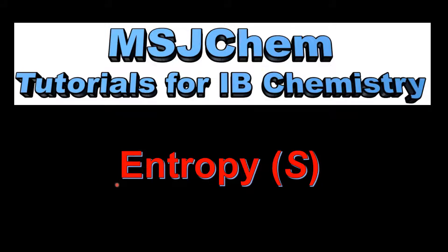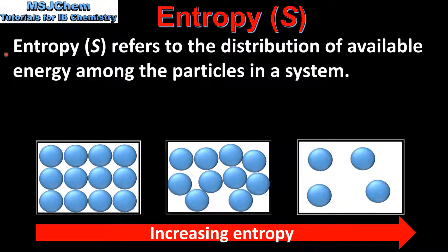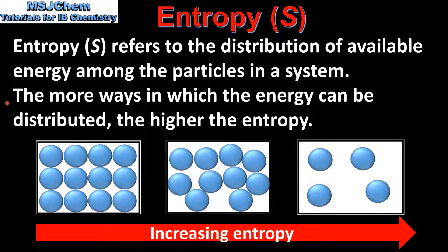This is MSJChem. In this video I'll be looking at Entropy. Entropy, which is given the symbol S, refers to the distribution of available energy among the particles in a system. The more ways in which the energy can be distributed, the higher the entropy.